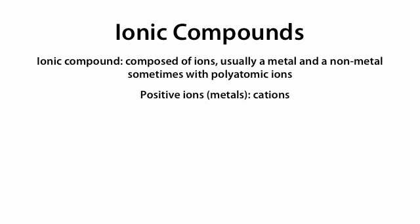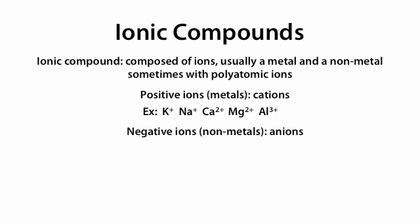Positive ions, which are usually metals, are called cations. Some examples include K+, Na+, Ca2+, Mg2+, and Al3+. Negative ions, which are usually non-metals, are called anions. Some examples include Cl-, F-, O2-, S2-, and I-.